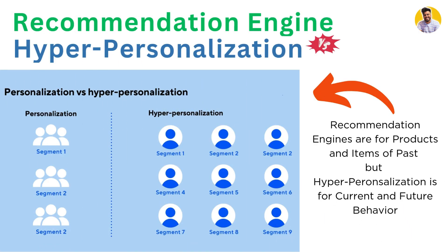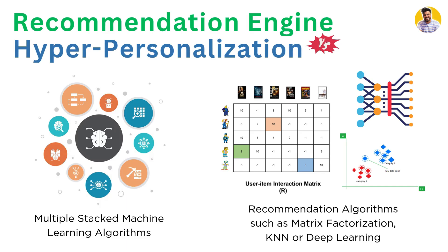If we talk about recommendation engines versus hyper-personalization: recommendation engines are often built around products or items, whereas hyper-personalization is built around individuals and their behaviors. Recommendation engines use algorithms like K-nearest neighbors, deep learning, or matrix factorization, working on content-based or collaborative filtering. But hyper-personalization uses various kinds of customer behavioral data rather than just past interaction data.